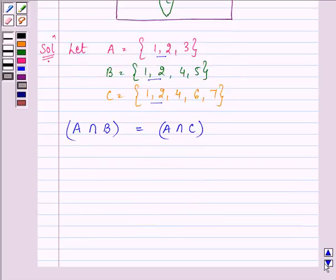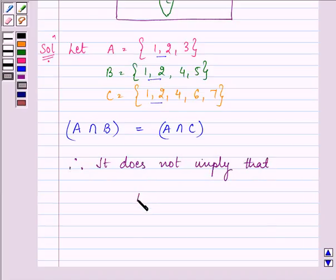But it clearly says that it does not imply, therefore we can write that it does not imply that set B is equal to set C. Therefore, set B is not equal to set C.